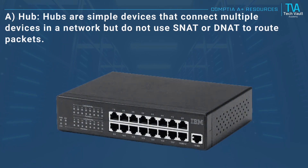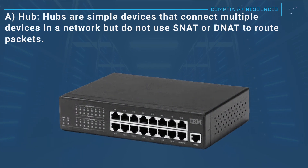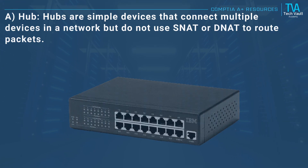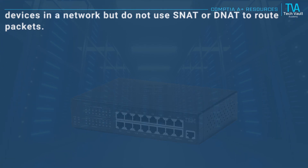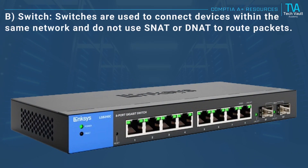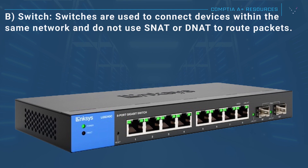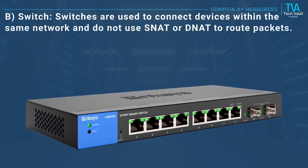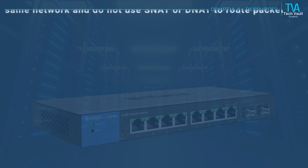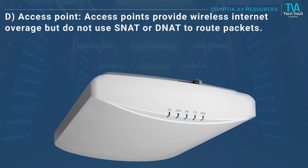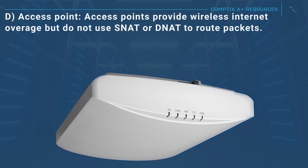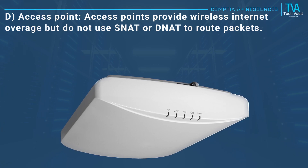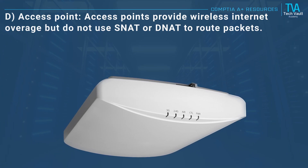A, hub: hubs are simple devices that connect multiple devices in a network but do not use SNAT or DNAT to route packets. B, switch: switches are used to connect devices within the same network and do not use SNAT or DNAT to route packets. D, access point: access points provide wireless internet coverage but do not use SNAT or DNAT to route packets.